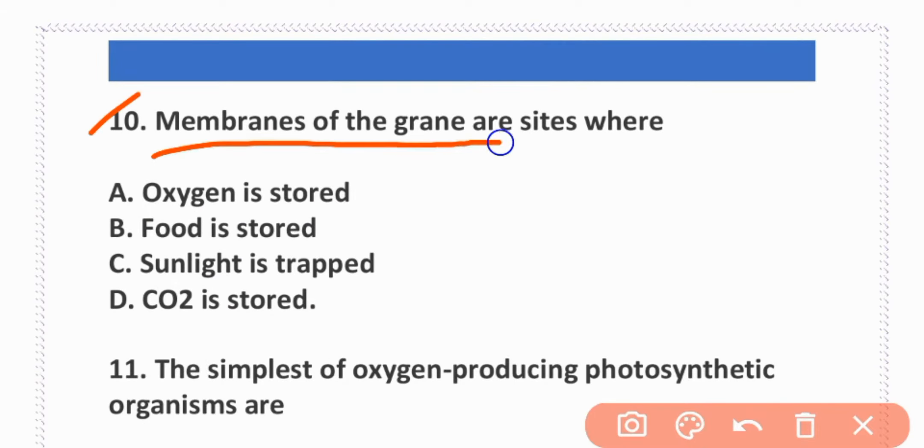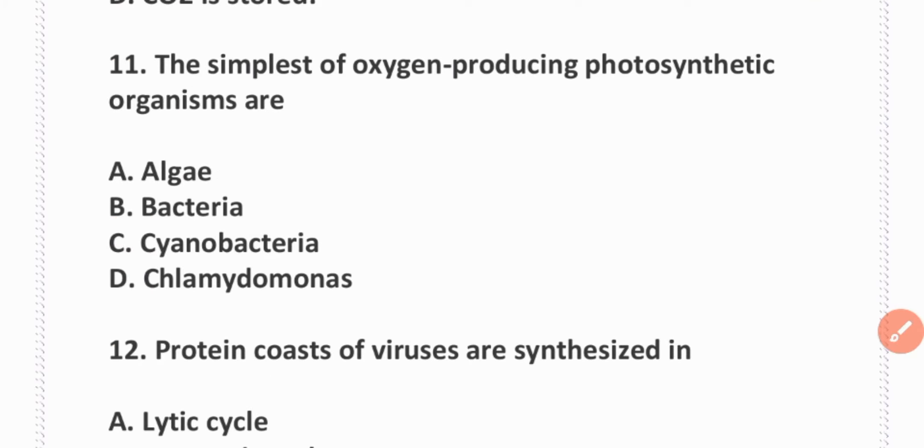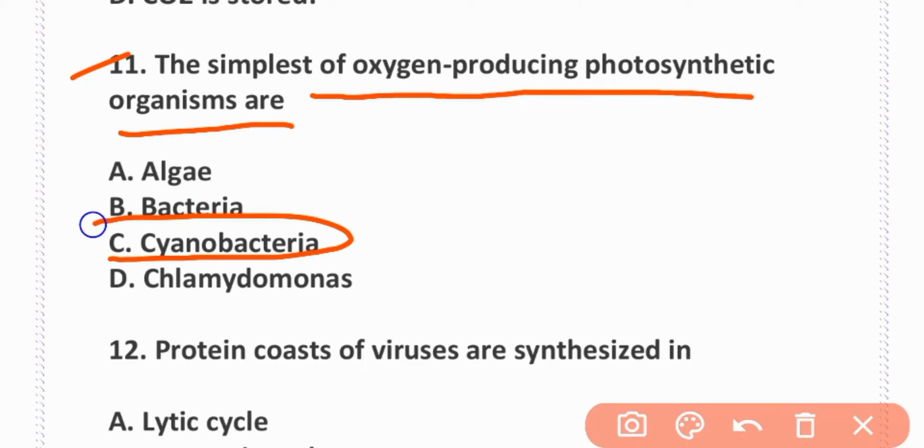Membranes of grana are sites where sunlight is trapped. C is correct. The simplest of oxygen-producing photosynthetic organisms are cyanobacteria. Option C is correct.